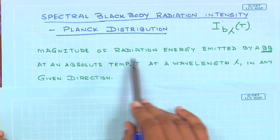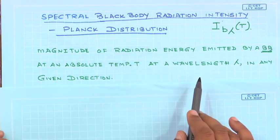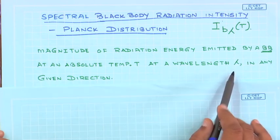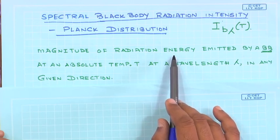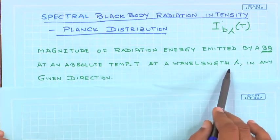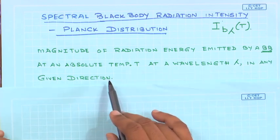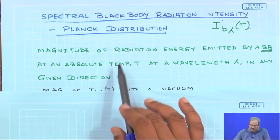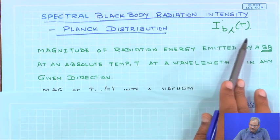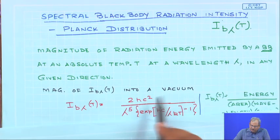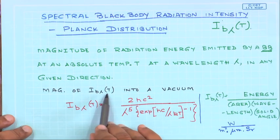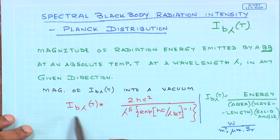The black body radiation intensity is defined as the magnitude of radiation energy emitted by a black body at absolute temperature T at any wavelength lambda in any given direction. It gives the quantum of radiation energy emitted in a specific direction and at a specific wavelength. This radiation energy depends on temperature, on wavelength lambda, and has a directional property. Using Planck's distribution, the spectral black body radiation intensity can be expressed for the case of vacuum in a specific mathematical form.